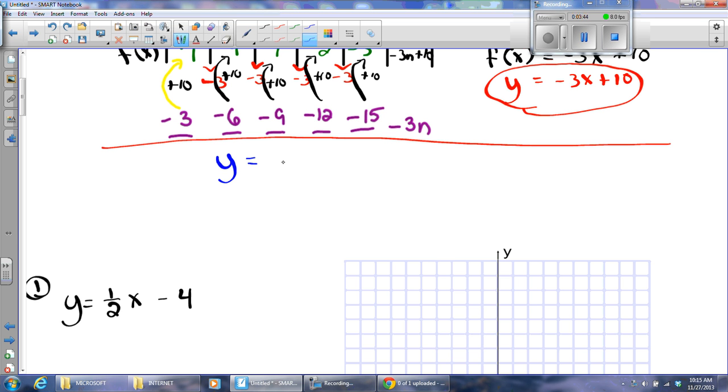When we have y all by itself for a linear equation, we like to call it slope-intercept form. Let me title that: slope-intercept form. And it looks like this: y equals mx plus b. You're going to see this an awful lot. Now, this is really easy to graph.